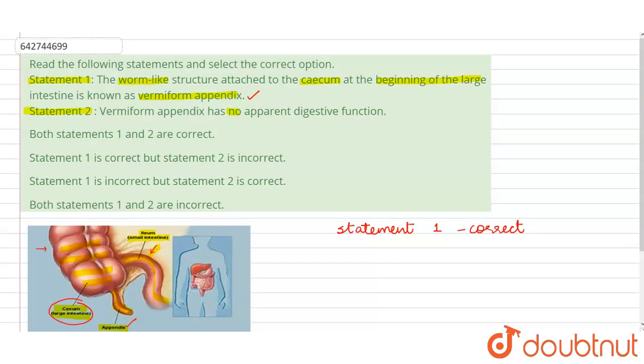Actually, the vermiform appendix is kind of a vestigial organ in case of humans. Earlier it was there, but during the course of evolution now it is disappearing or becoming very small, or what we can say it is a rudimentary organ.